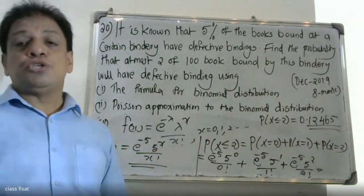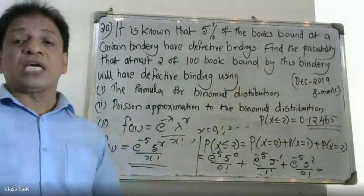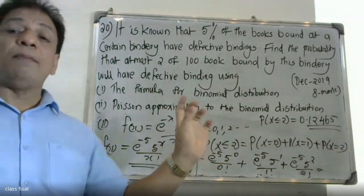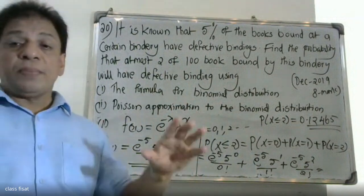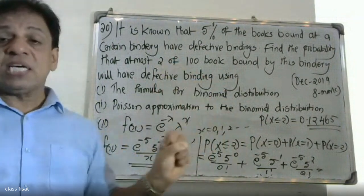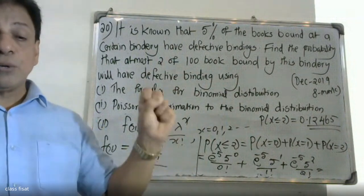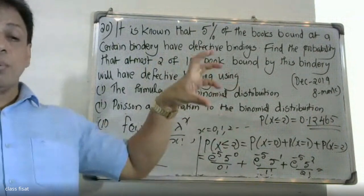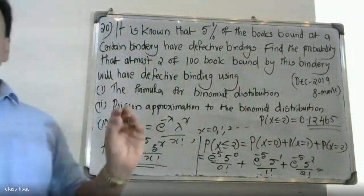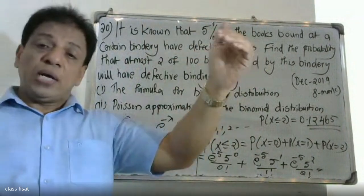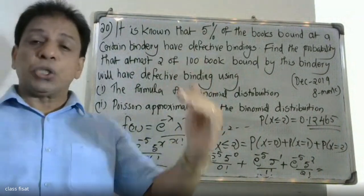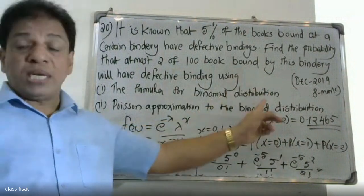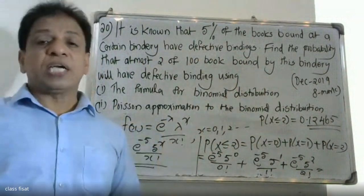So the Poisson approximation gives P(X ≤ 2) equal to 0.12465. To summarize: the binomial distribution function is nCx times p raised to x times q raised to n minus x, and the Poisson approximation uses e raised to minus lambda times lambda raised to x divided by x factorial. We will see you in the next video.